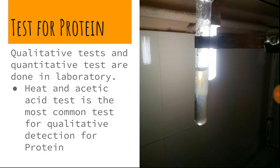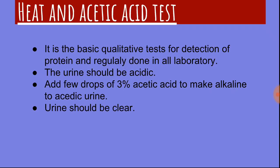Next, tests for protein. Generally two types of tests are done in medical laboratories: qualitative tests and quantitative tests. The qualitative test — heat and acetic acid test — is the most common test. Here a picture of the heat and acetic acid test is given. The urine is in tubes; heat the upper portion and a white cloud is formed. The urine should be acidic; add a few drops of three percent acetic acid to make alkaline urine acidic, and the urine should be clear.